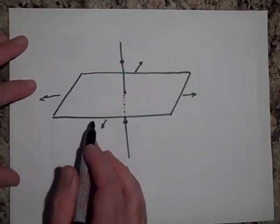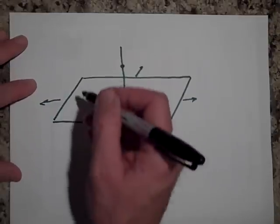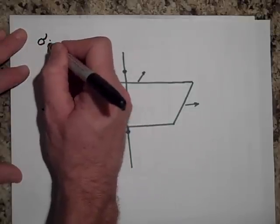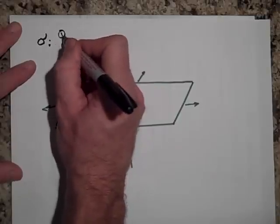We can't talk about rho this time because we don't have a volume. This is an area, a surface area. So there's another way to represent surface area charge and that's sigma. Sigma is equal to the charge per area.